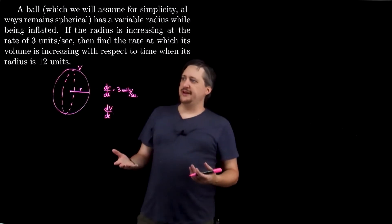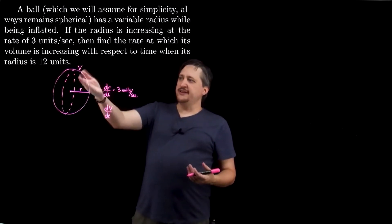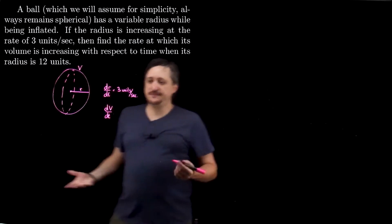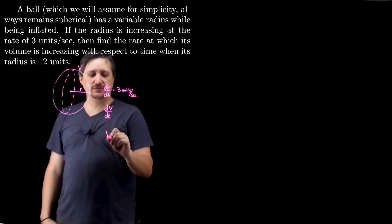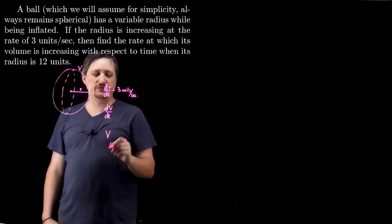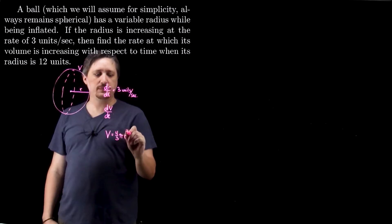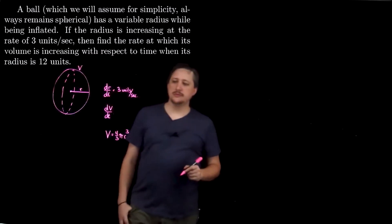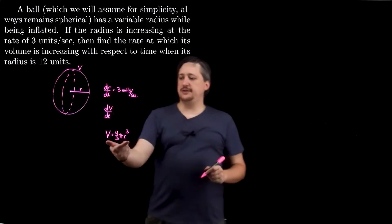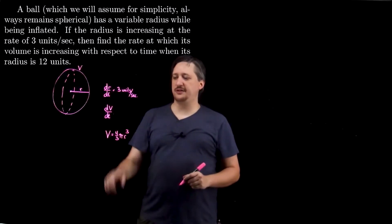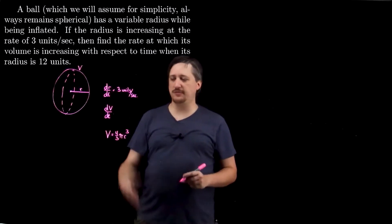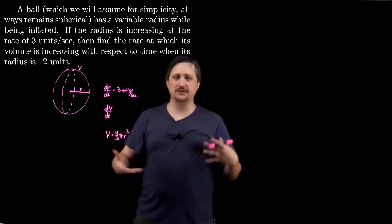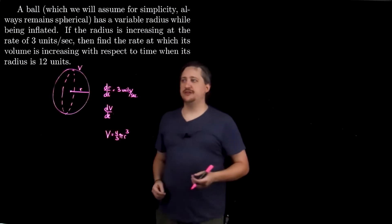So I guess what I need is something that relates volume, because that's what I want, to R, which is what I have information on, and eventually I'm going to take a derivative with respect to time. Well, the only thing I can think of that relates volume and radius is the equation for the volume of a sphere, which is 4/3 π r³.